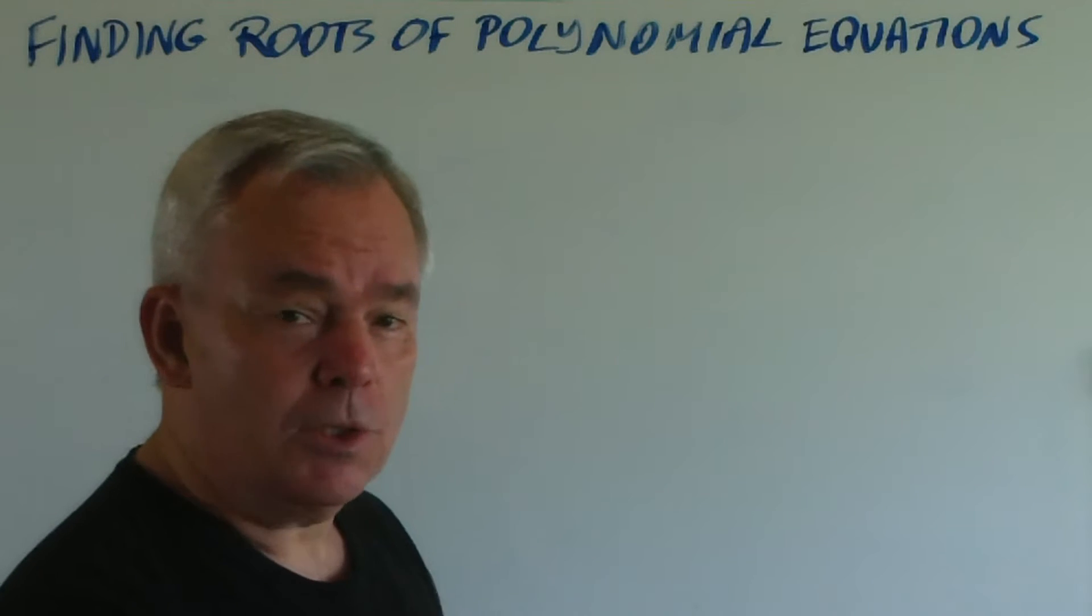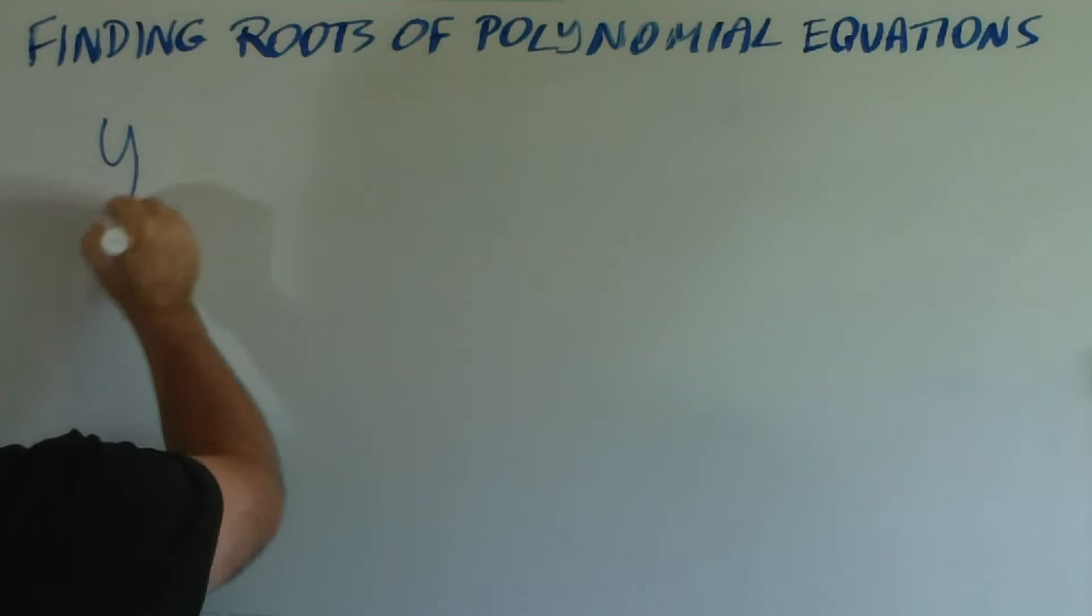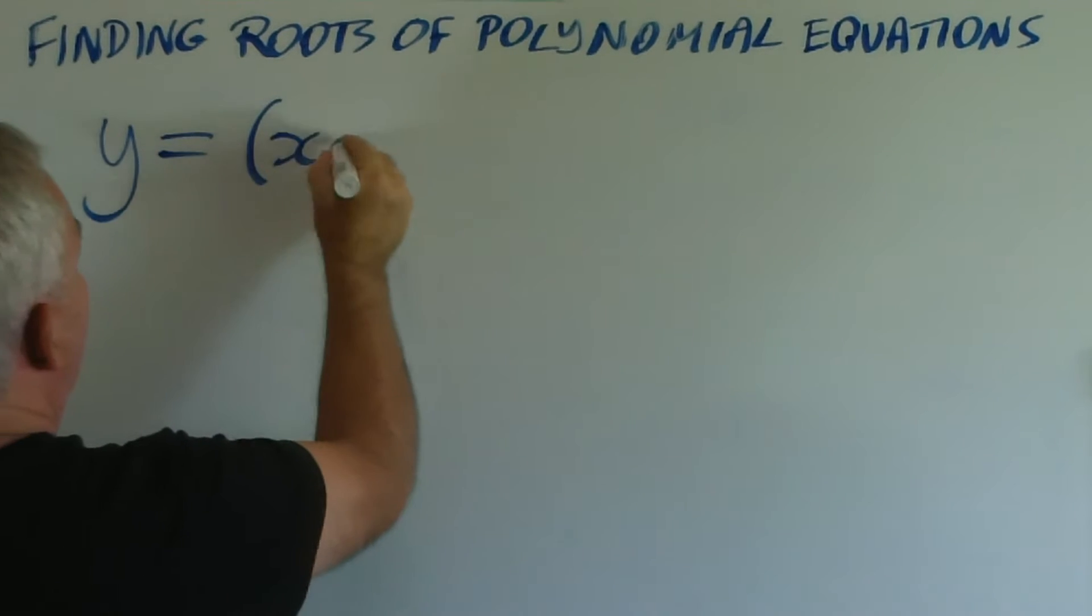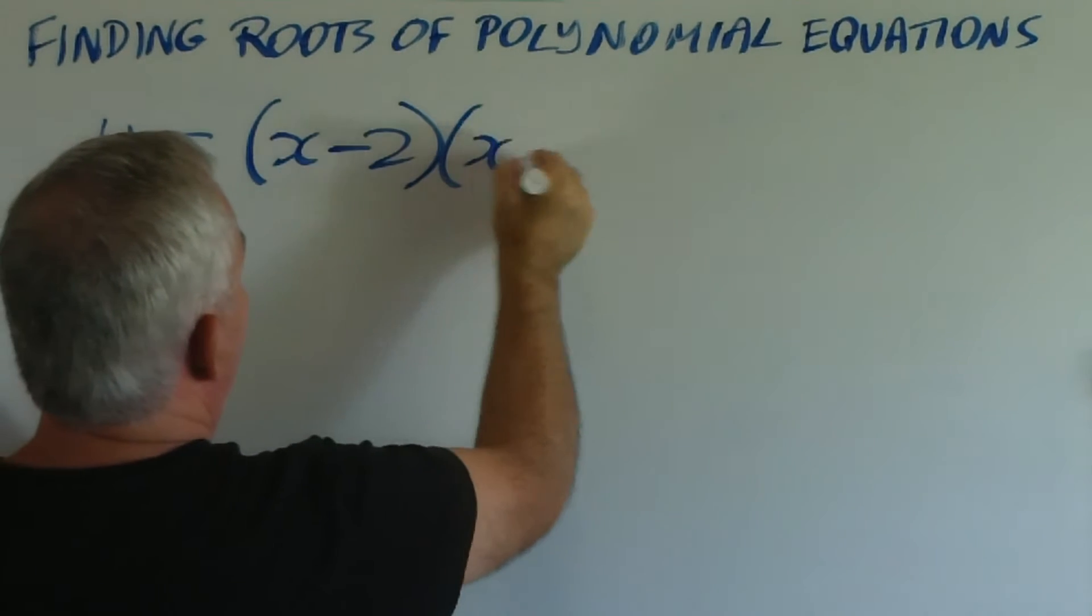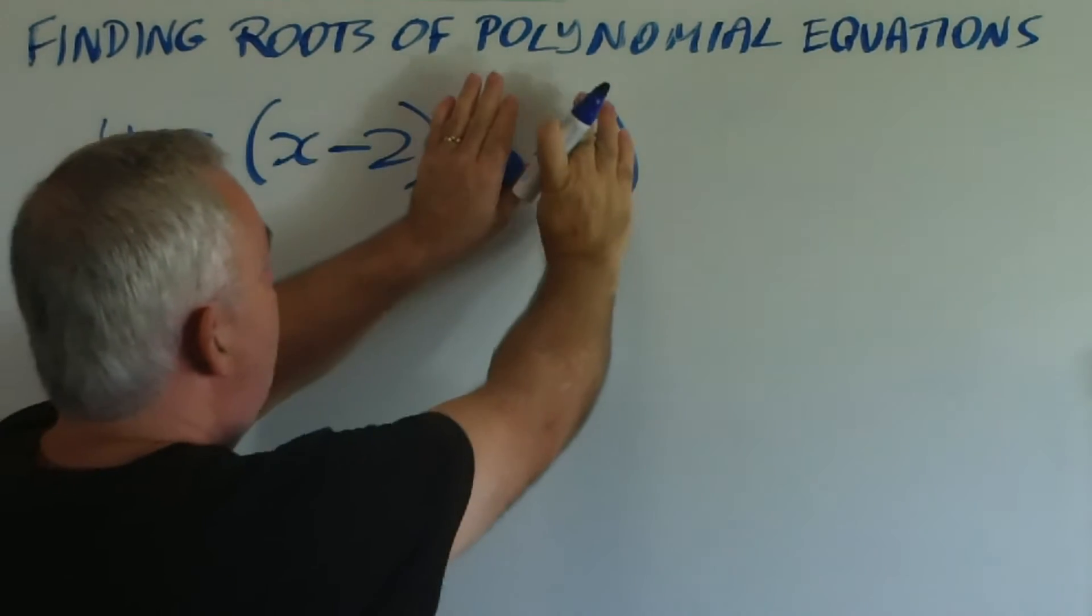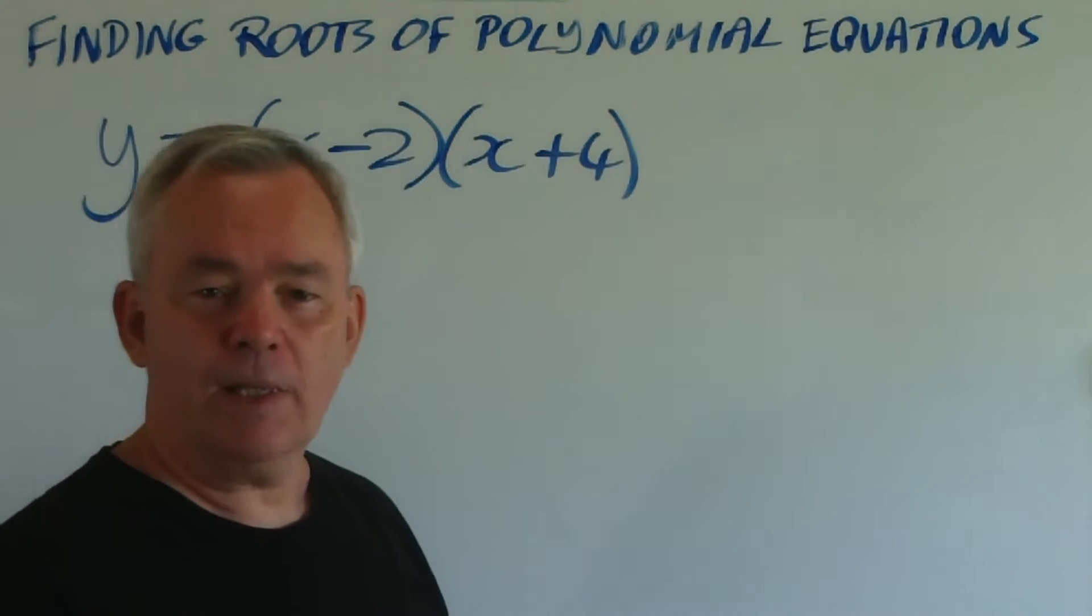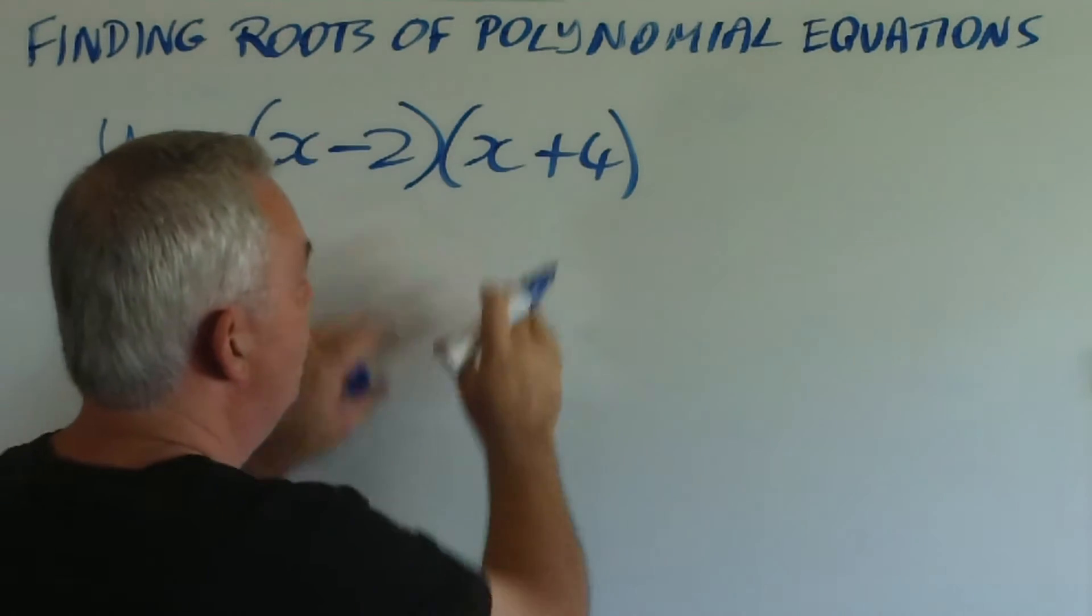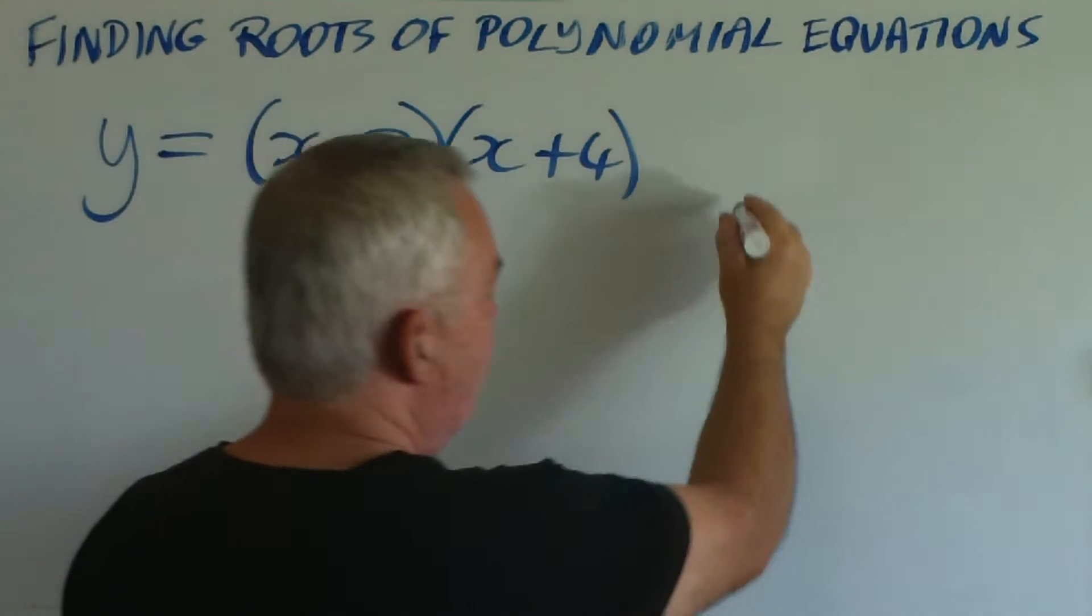Now, a factorised polynomial looks like this: y equals (x-2)(x+4)(x-1). If it had one term, it would be a straight line. With two terms, it becomes a parabola, shaped like this.